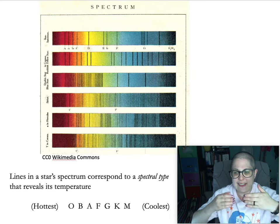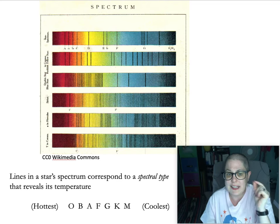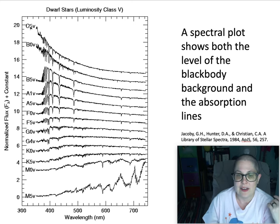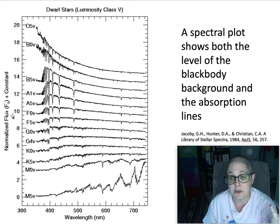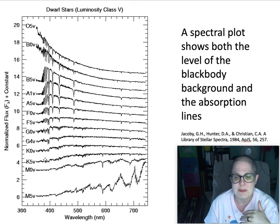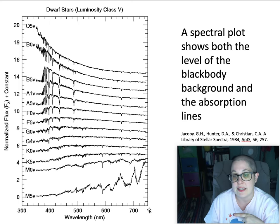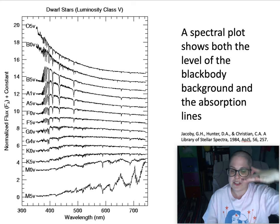If you take that rainbow spectrum and flip it on its side so you're really looking at how bright each wavelength is, you get a plot like this. This is how we typically look at stellar spectra. The top is O and it goes down all the way to M, which is the coolest — so hottest at the top, coolest at the bottom. The luminosity or flux is just scaled so they all fit. The wavelength shows short wavelength on the left — that's ultraviolet, purple, blue — and then red all the way to infrared on the right side.